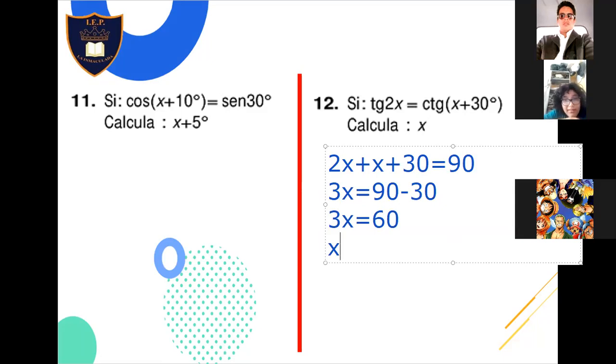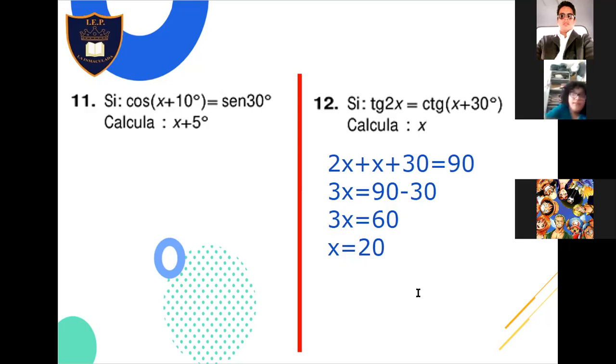¿Está mal esto? ¿Qué pasó? No entendí. A ver, chicos, tranquilos. 2X más X es 3X. Ese 30 que está ahí pasa a restar, ¿verdad? ¿Y cuánto es 90 menos 30? 60. Ahora, X es igual a 60 entre 3, que es 20. La nota que todos se van a sacar en el examen.